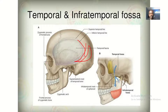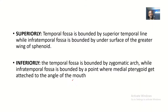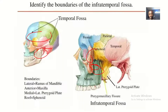The supramastoid crest bounds the temporal fossa posteriorly, while the infratemporal fossa is bounded posteriorly by the condylar process of the styloid process.